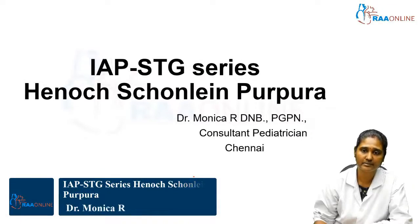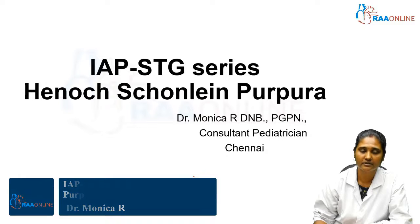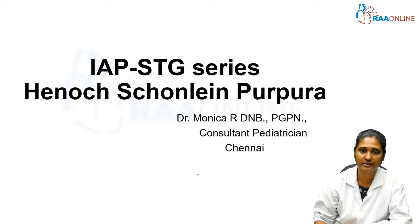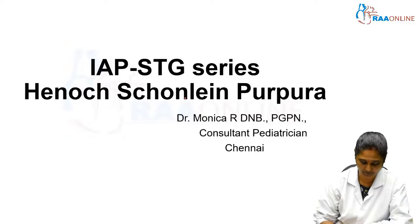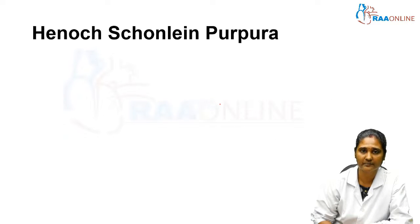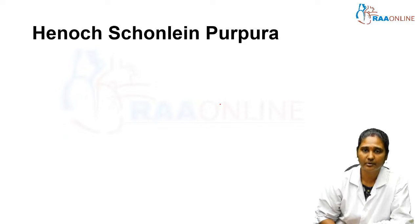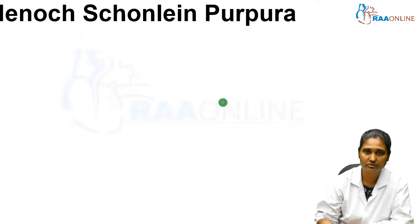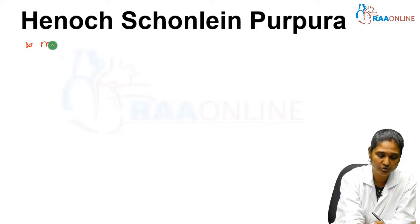Welcome to the RAW online teaching program. I am Dr. Monica, your pediatric faculty. Today's session is on the standard treatment guidelines provided by the Indian Academy of Pediatrics. In this series, we are going to cover Henoch-Schönlein Purpura, that is HSP, which is the most common vasculitis in childhood.